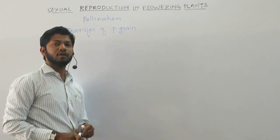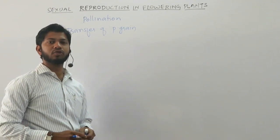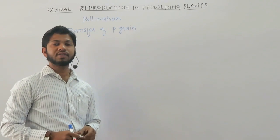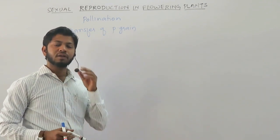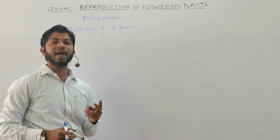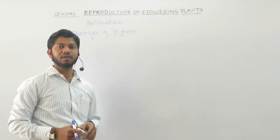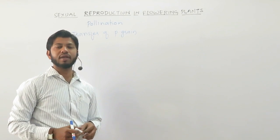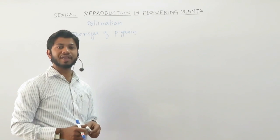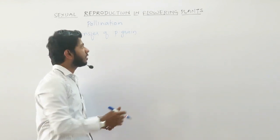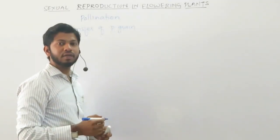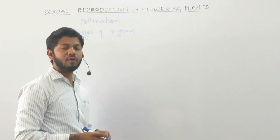We know that pollen grain, or microspore, is a partially developed male gametophyte. Inside the anther, pollen grain undergoes first mitosis and becomes a bicellular structure. That bicellular pollen grain is released out from the anther and with the help of some external agencies, this pollen grain is deposited on the stigma.